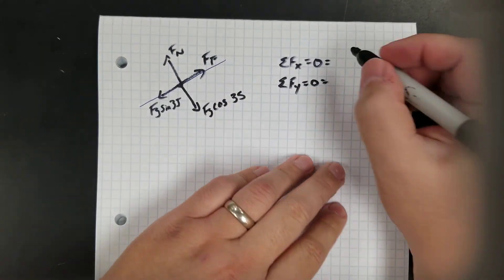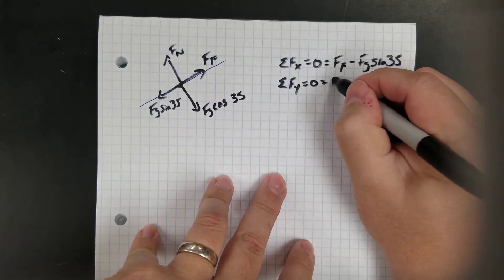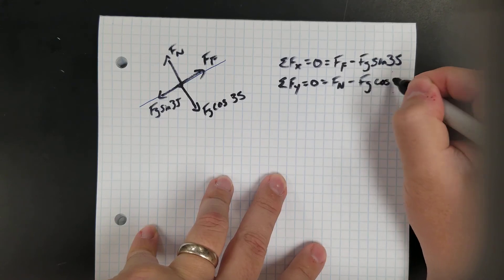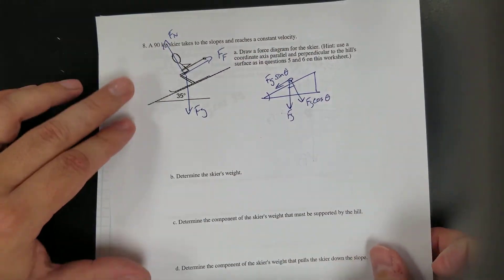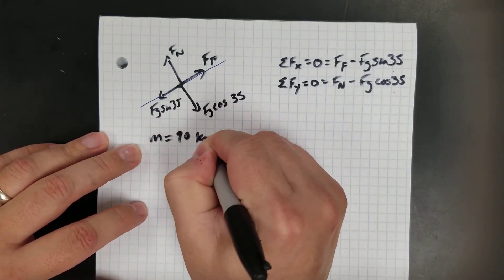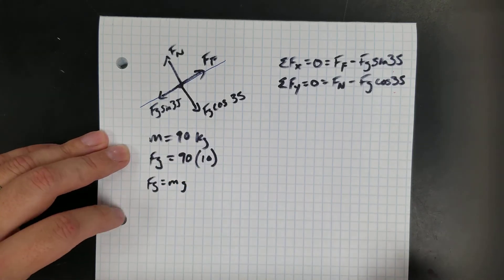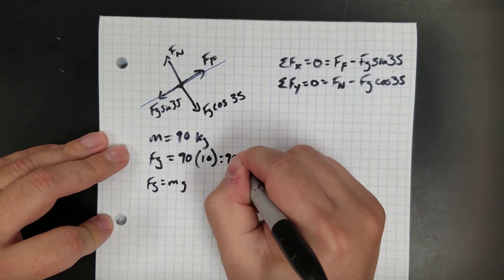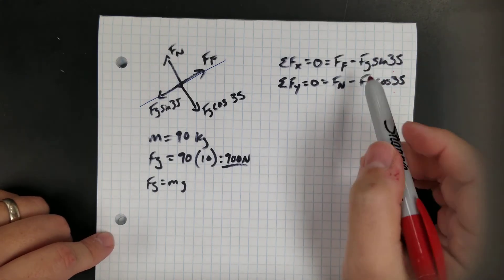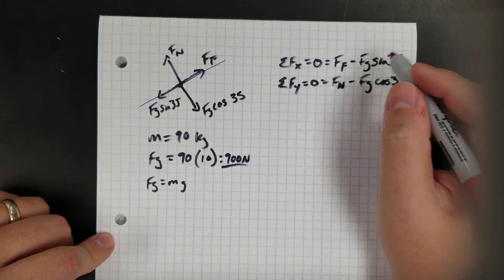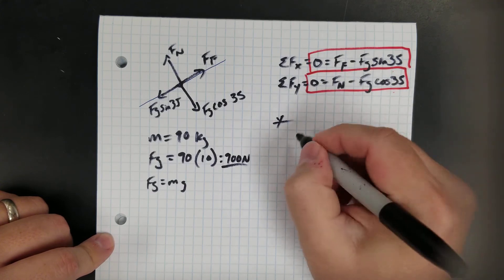So I'll draw my incline to make it easier to look at. On my free body diagram, I have friction, I have a normal force, and then my components of gravity: FG cosine 35 perpendicular to the slope and FG sine 35 parallel to the slope. So let's write equations. Net force in the X is zero because it's at constant speed, and net force in the Y is zero because he's not accelerating into the air. For X: FF minus FG sine 35 equals zero. For Y: FN minus FG cosine 35 equals zero.